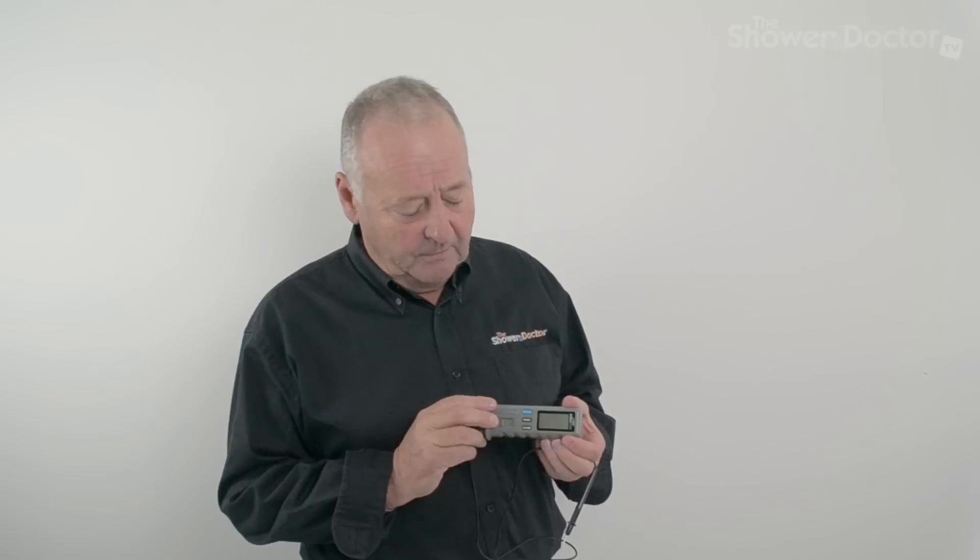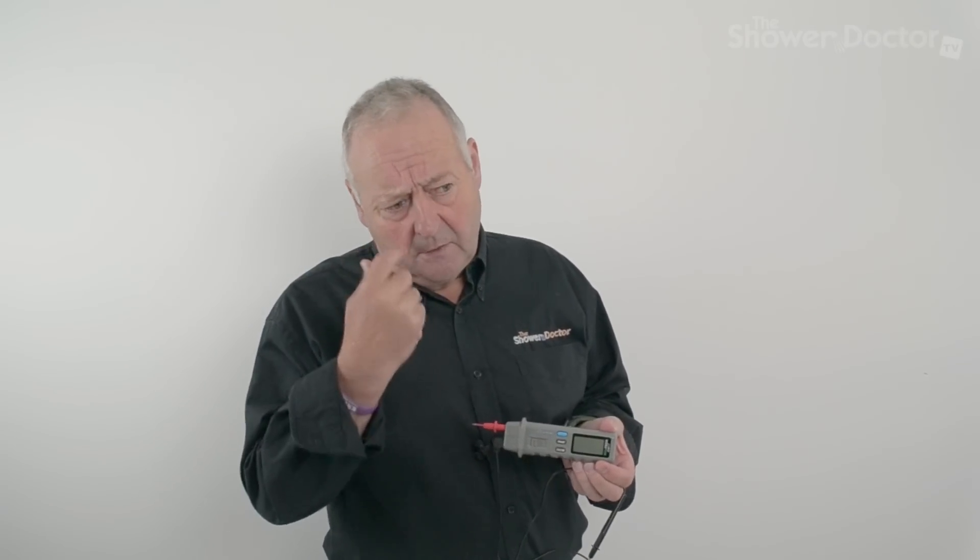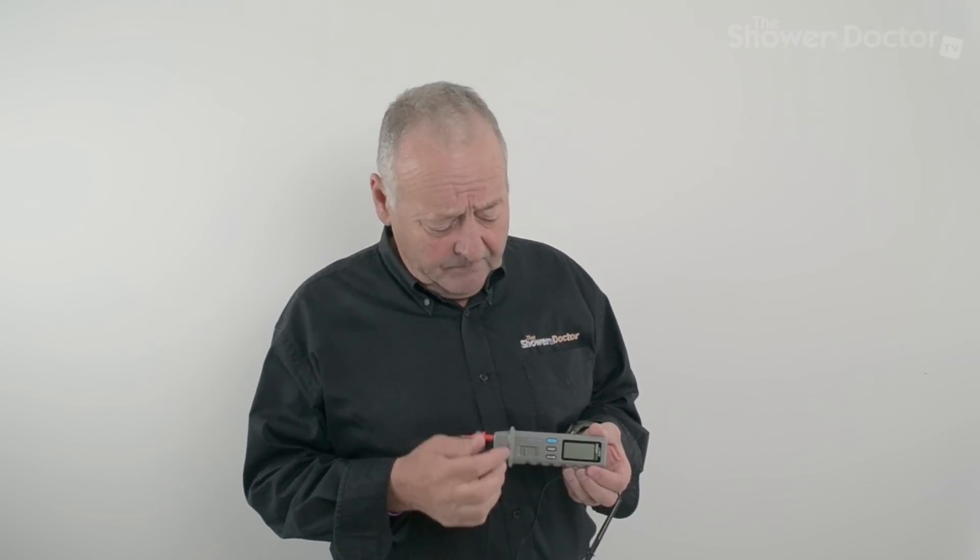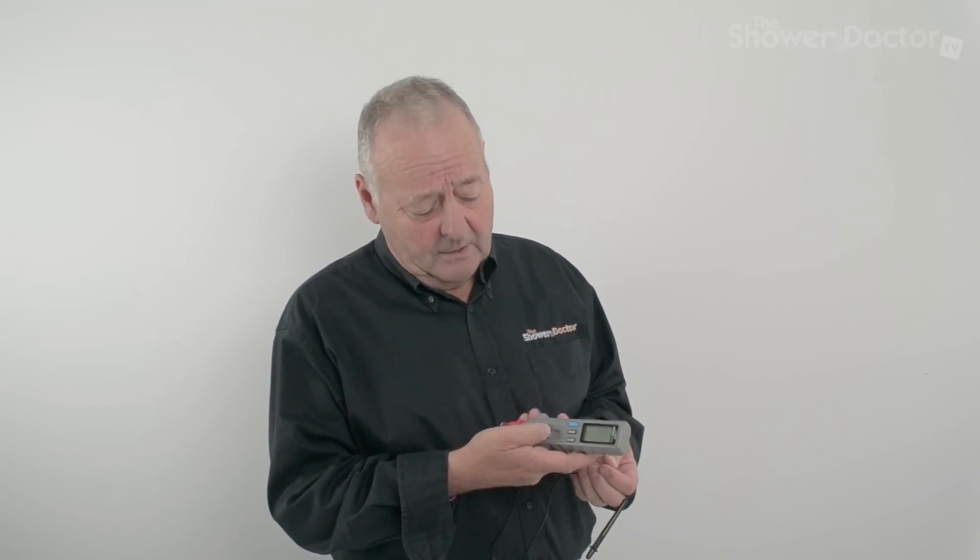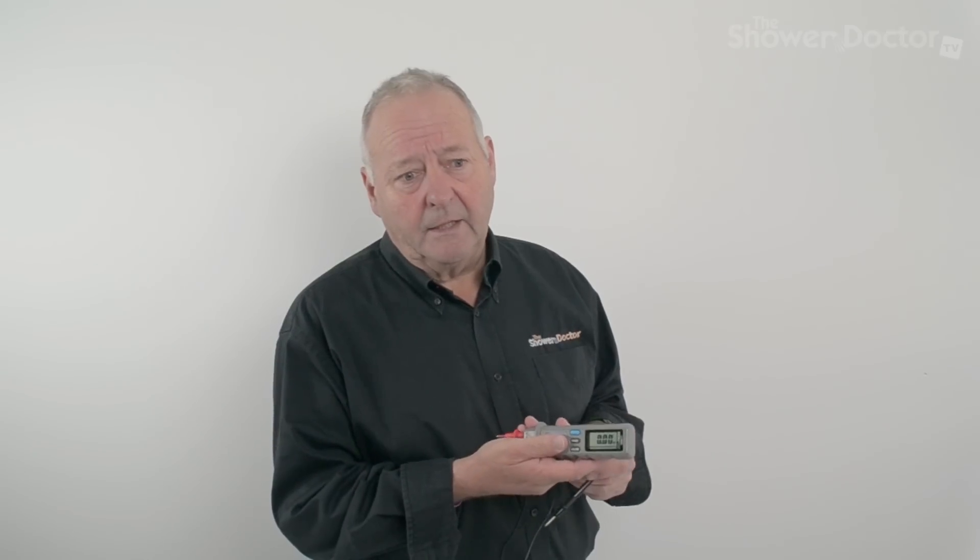We also sell this slightly more expensive multimeter that's going to cost about £60 or £70. The advantage of this is that you can use it using one hand but it's really more for the professional. The small yellow one is good for everything inside the shower.